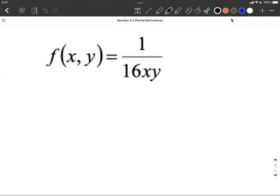So if we want to take these partial derivatives, I don't want to use the quotient rule. Instead, I'll rewrite this as 1/16 times x to the negative first power times y to the negative first power. Moving both variables to the numerator with negative exponents—they had positive exponents in the denominator.